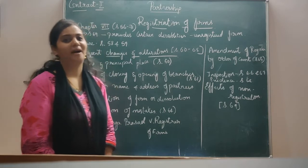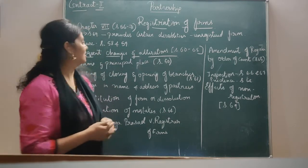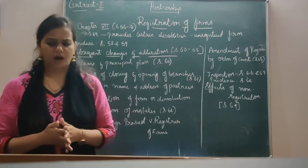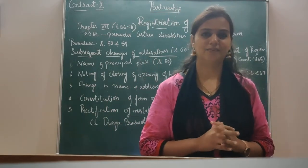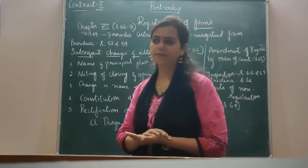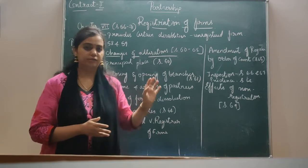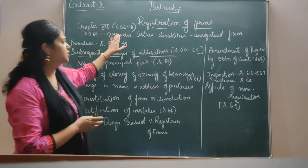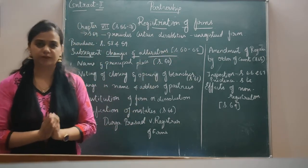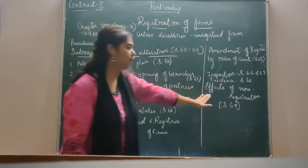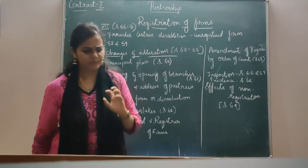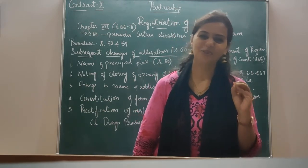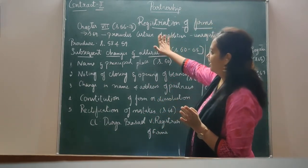The last part under the Indian Partnership Act is registration of the firm — Chapter 7, Section 56 to 71 deals with registration of firms. Registration of a firm is not compulsory in India — it does not impose any penalties. However, Section 69 provides certain disabilities for the unregistered firm and speaks about the effects of non-registration. By those disabilities, an unregistered firm has to suffer some losses.